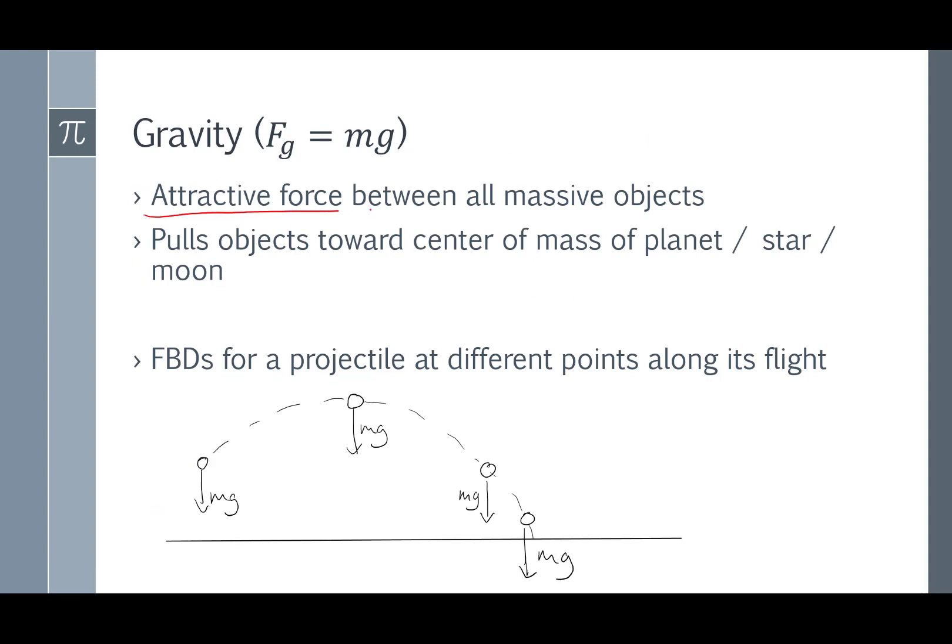Gravity is an attractive force between all massive objects. The variable for the force of gravity is F sub g, and the equation is mass times acceleration due to gravity. So sometimes you'll just see mg instead of F sub g for gravity. What that means for objects on Earth is that they're pulled towards the center of mass of the planet or star, which on Earth just means the force on them pulls straight down.